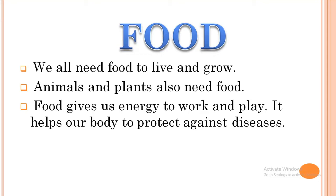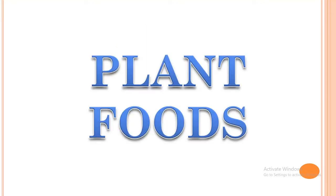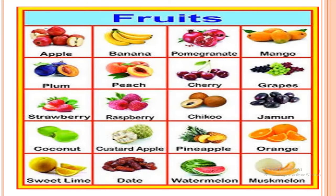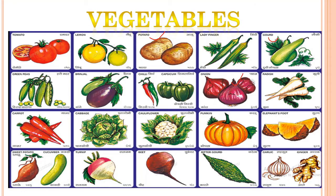Plant foods are the food we get from plants. These are the fruits: apple, banana, pomegranate, mango — all these are fruits that we get from plants. We also get different types of vegetables: tomato, lemon, potato, ladyfinger, gourd, and beet. These are the vegetables that we get from plants.